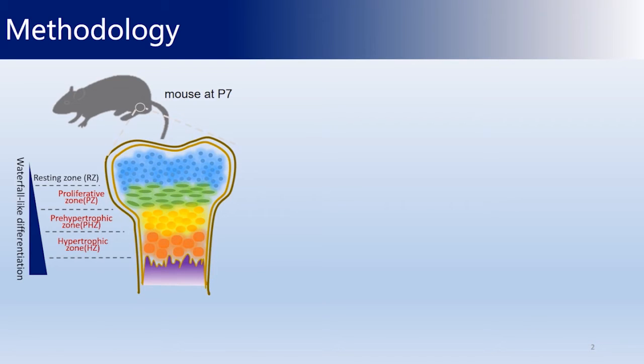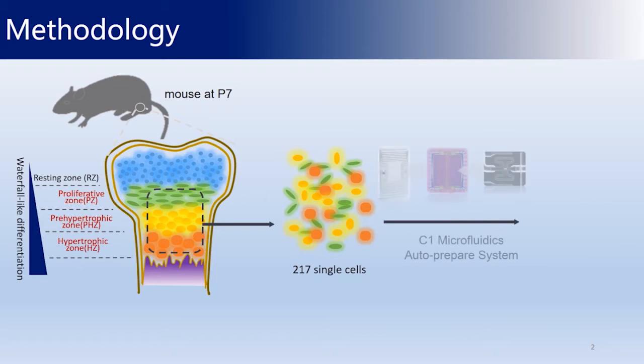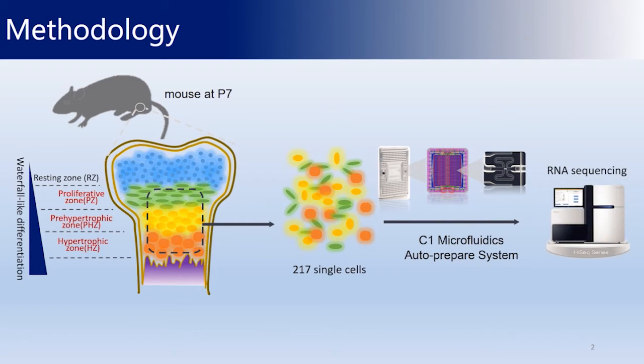A total of 217 single cells were captured by a C1 microfluidic system, which was followed by RNA sequencing in order to analyze the gene expression profile of each single cell.